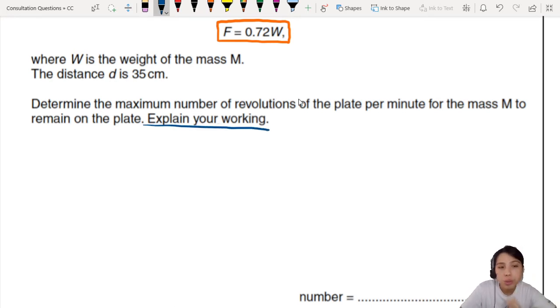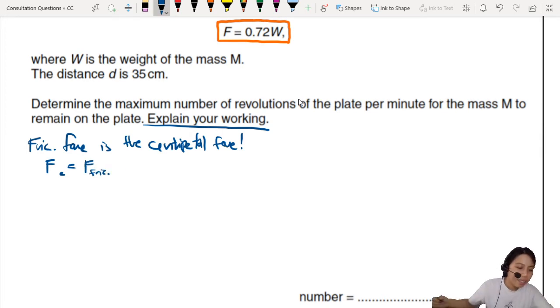The maximum value of this F is already given to us. Any larger than that, frictional force won't be enough to keep the mass on the plate. Let's start by writing it out. We need to explain our working. I'll say the frictional force is the centripetal force.